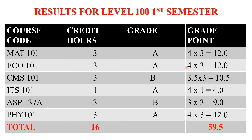For CMS 101, the student had B+. The numerical value assigned to B+ is 3.5, so the grade point is 3.5 × 3 = 10.5. For ITS 101, it is a 1 credit hour course and the student had A. The numerical value for A is 4, so the grade point is 4 × 1 = 4.0.